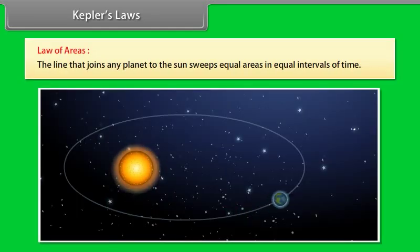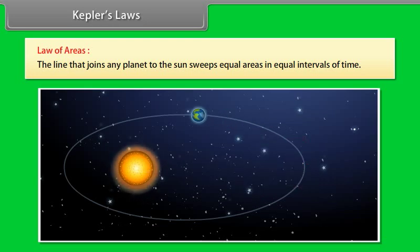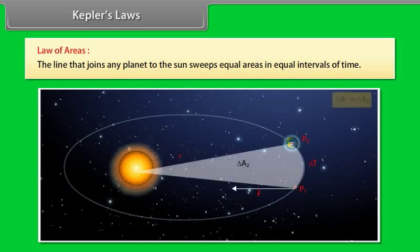The line that joins any planet to the sun sweeps equal areas in equal interval of time. This law comes from the observation that planets appear to move slower when they are farther from the sun than when they are the nearer.